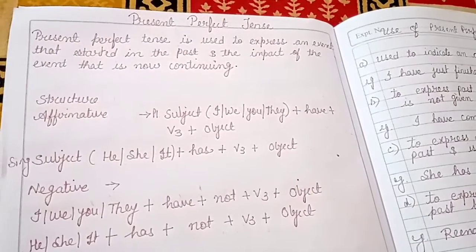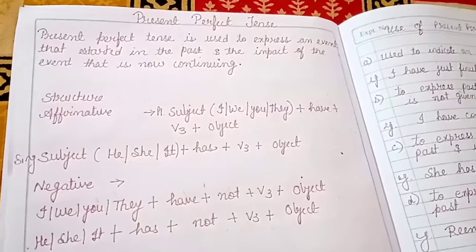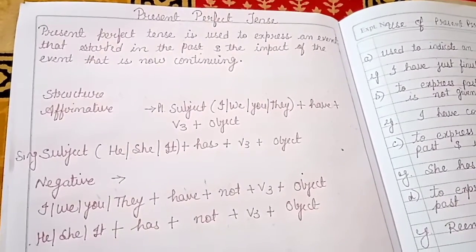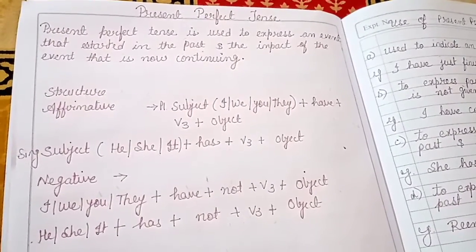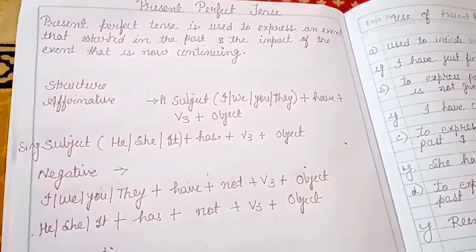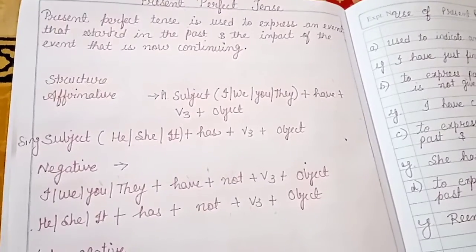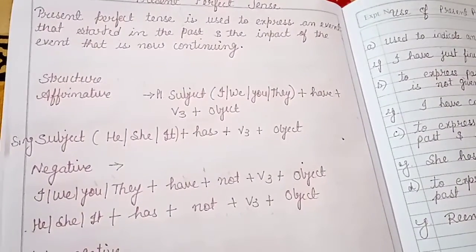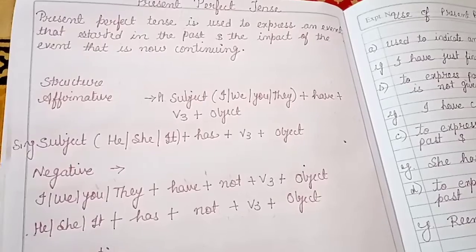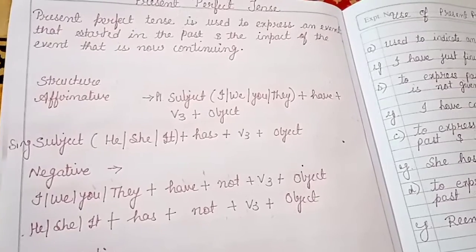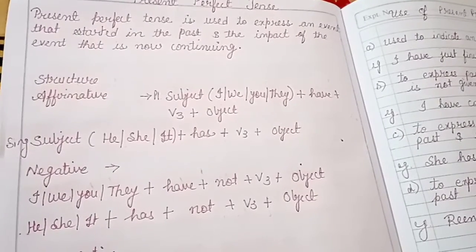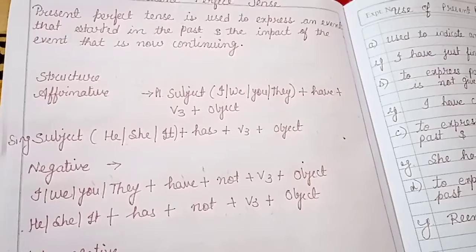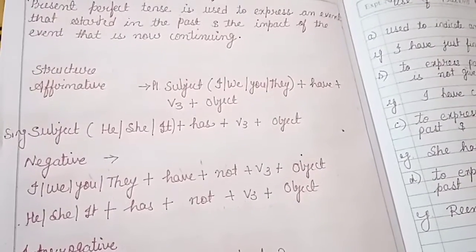In this tense, we first look at the structure for Present Perfect Tense for affirmative sentences. For any plural subject — I, We, You, They — the structure is: subject plus 'have' plus verb third form plus object.